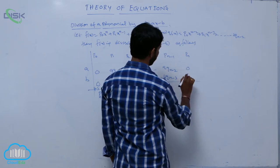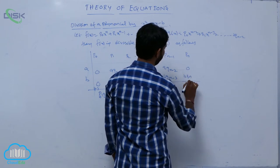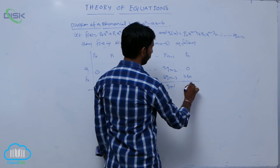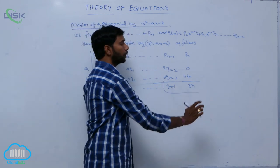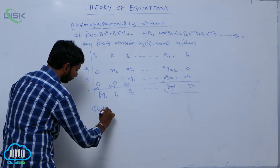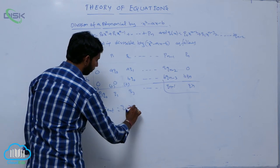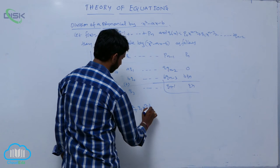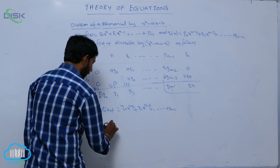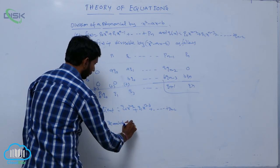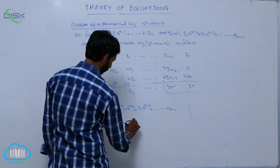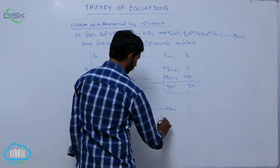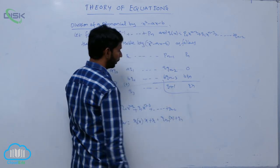The quotient is equal to q naught times x to the power n minus two, plus q one times x to the power n minus three, and so on plus q n minus two. And the remainder is equal to r one of x plus r two, that is equal to q n minus one times x plus q n.